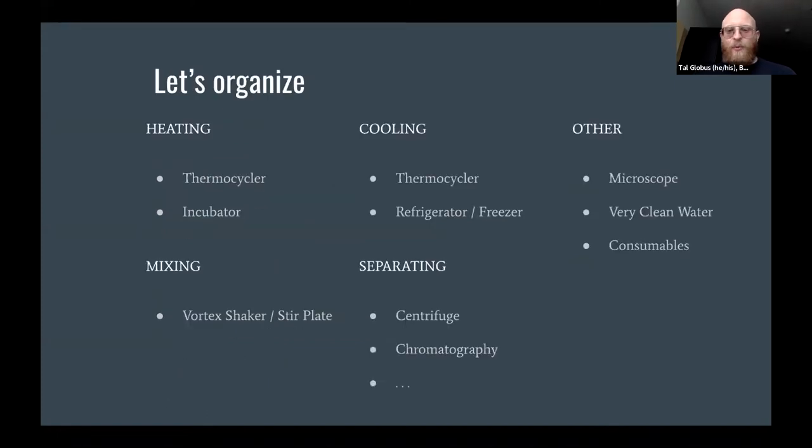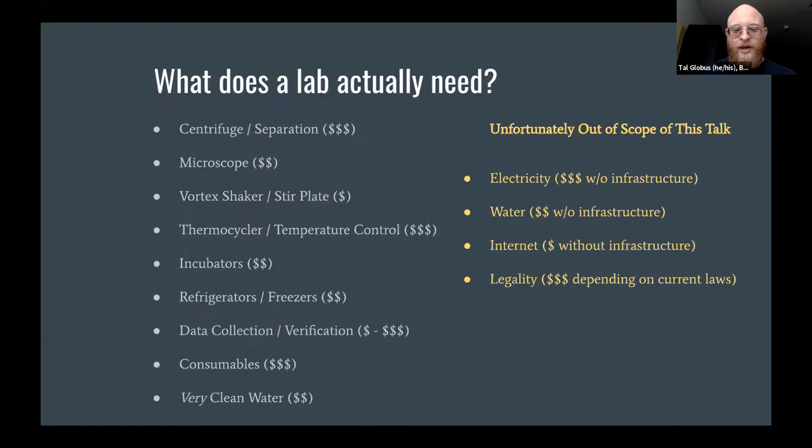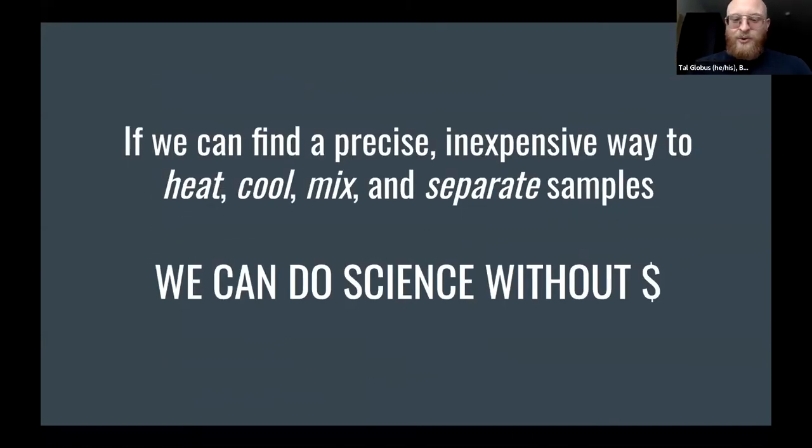If we start looking at what we're dealing with, we have a few basic functions that we have to fill. We have to heat things, we have to cool things, we have to mix things, and we have to separate things. And then there's this other category which we're largely going to ignore. As soon as you reduce it to these four categories, you realize there are some serious optimizations that we can use to cut costs. The goal is going to be: how far can we push this by going over specific implementations of these four categories? If we can find a precise and inexpensive way to heat, cool, mix and separate samples, then we can pull the money out of science. And if we can do that, then we can open up our community, increase the number of people involved, the number of demographics that can get involved, the amount of innovation that we can see.